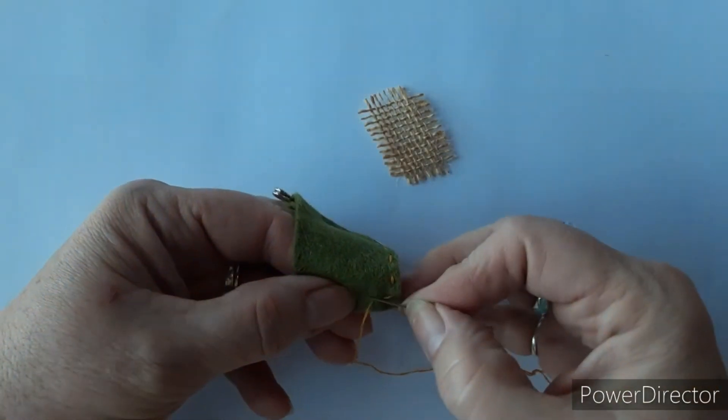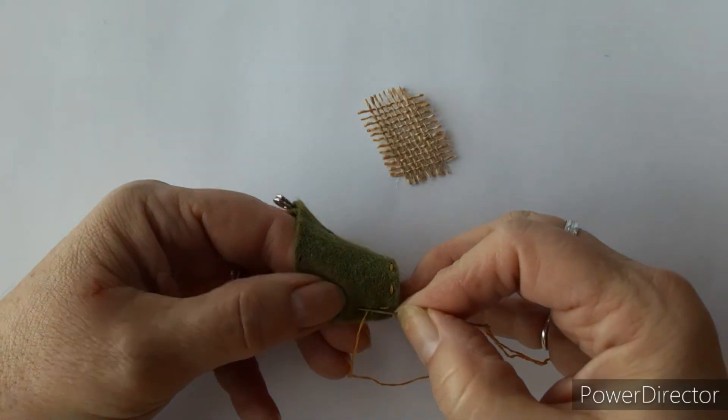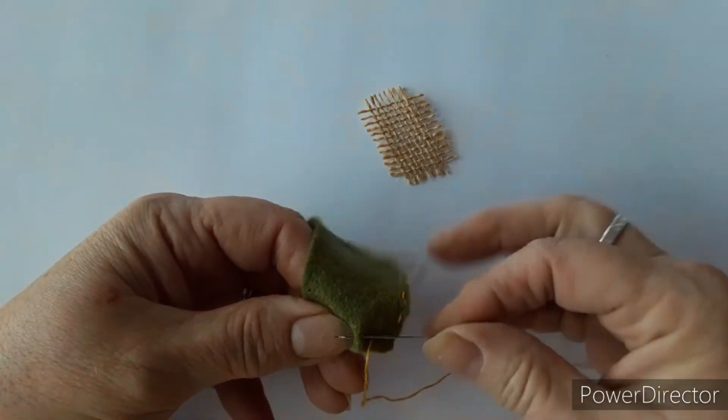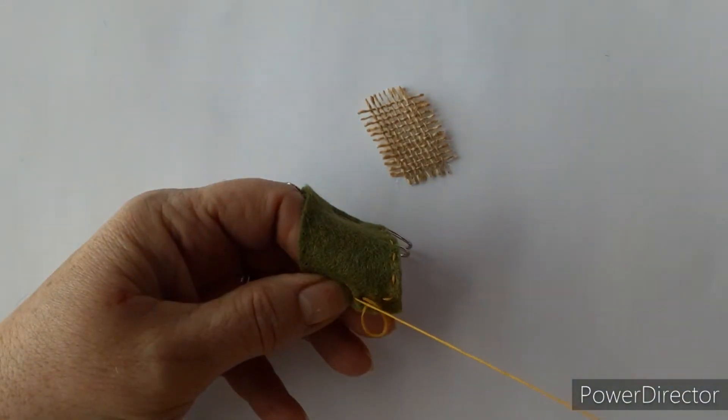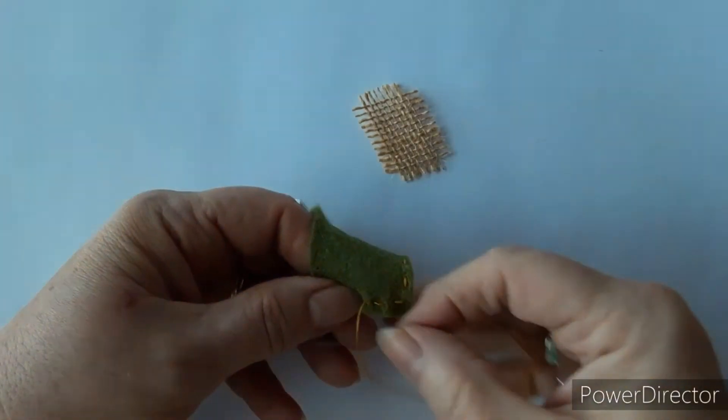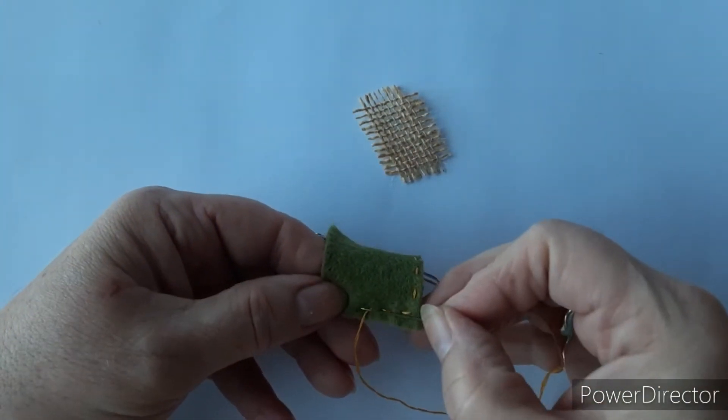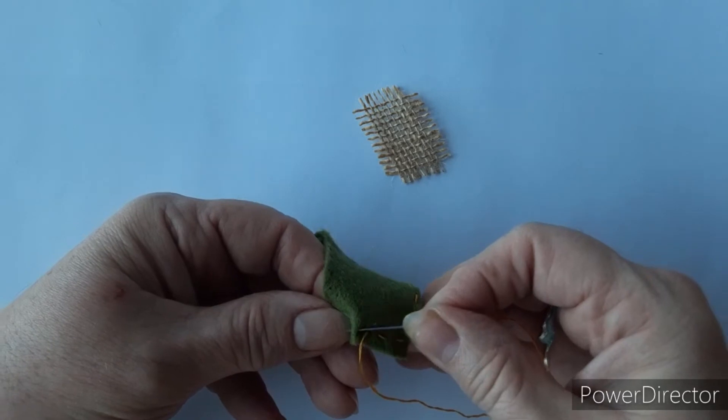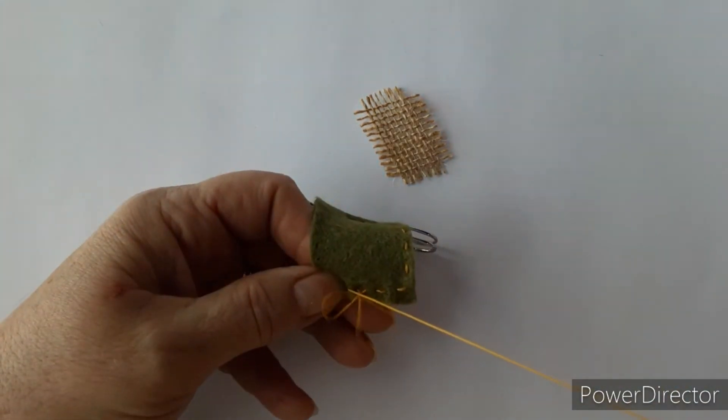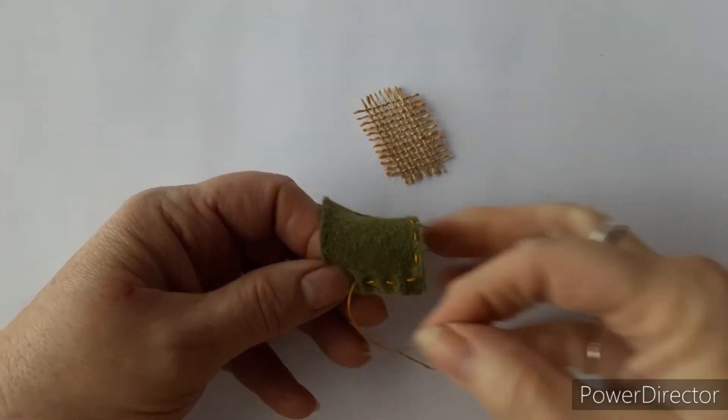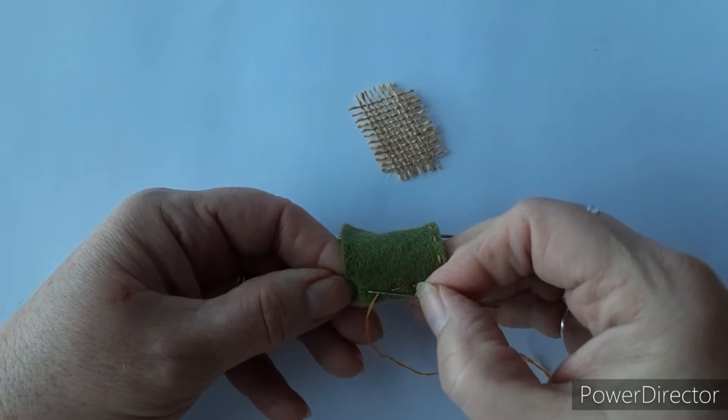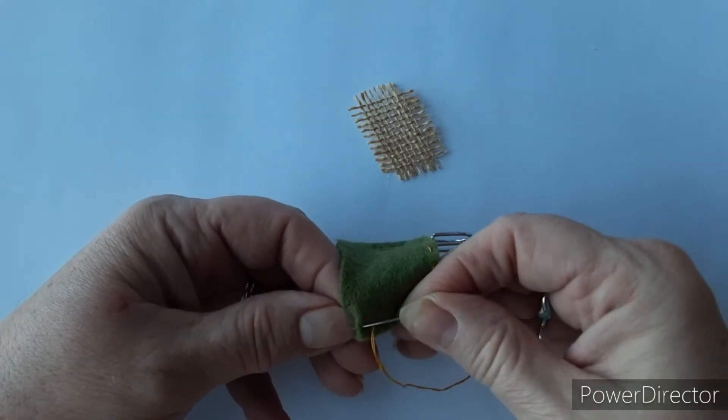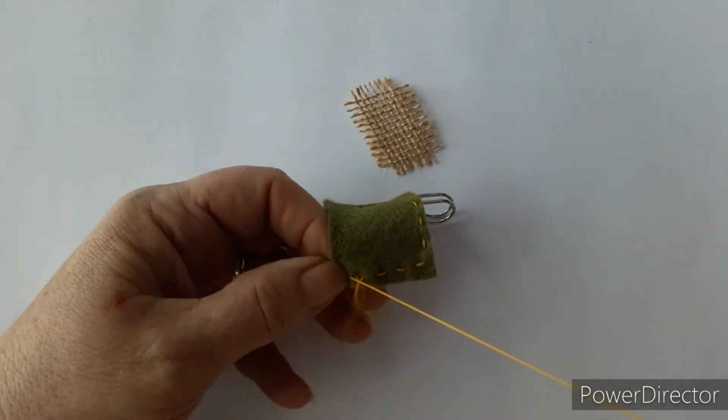I'm going to work around the corner and work my way through. Keep your stitches at an equal length. It looks neat. I'm going to turn and come back up the other side.